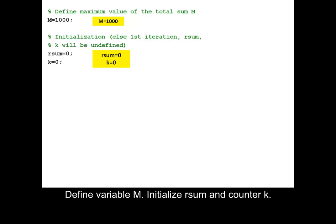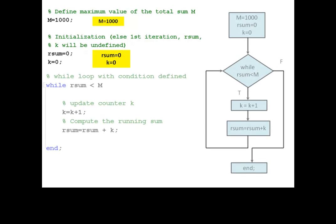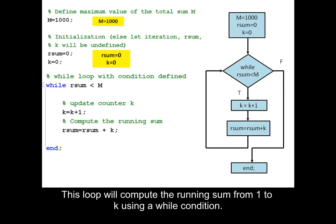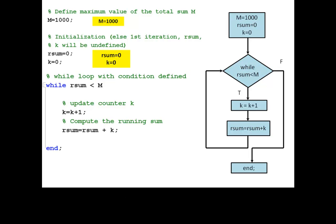Define variable m, then initialize rsum and counter k. This loop will compute the running sum from 1 to k using a while condition. Check the while condition: rsum is less than m. Condition is found to be true.